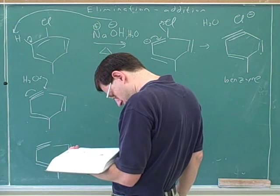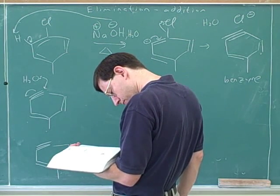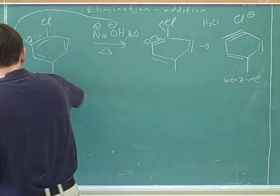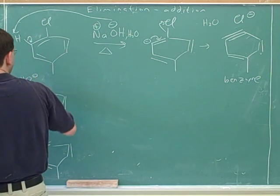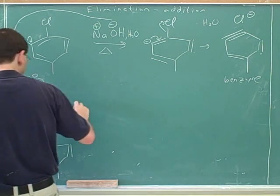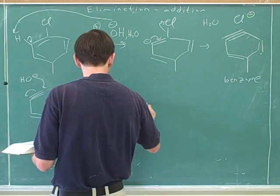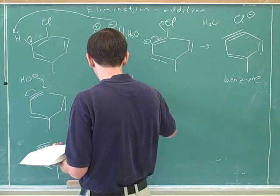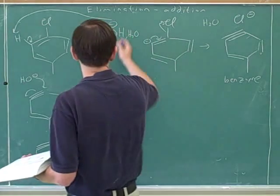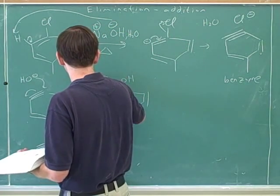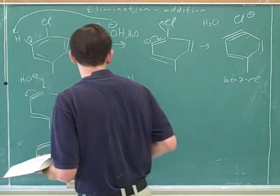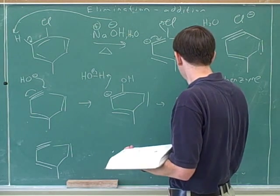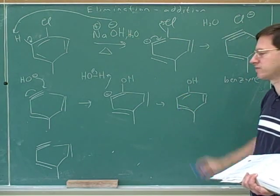So we have water or hydroxide attack. The book does it with another hydroxide attack. That puts a negative charge here, and then we can use the water produced in the first step to get rid of the negative charge.